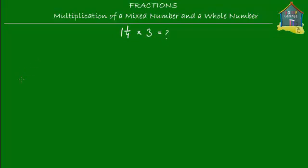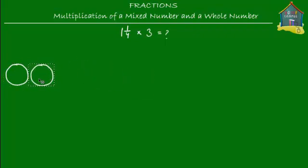Let's take 1 and a quarter of something — pizzas, as usual. So I take 1 and a quarter pizzas. I take this one whole pizza and copy it here, and I mark 1 and a quarter on these two pizzas together. Here is my one whole pizza and this is my quarter pizza, so together they are equal to 1 and a quarter pizzas.